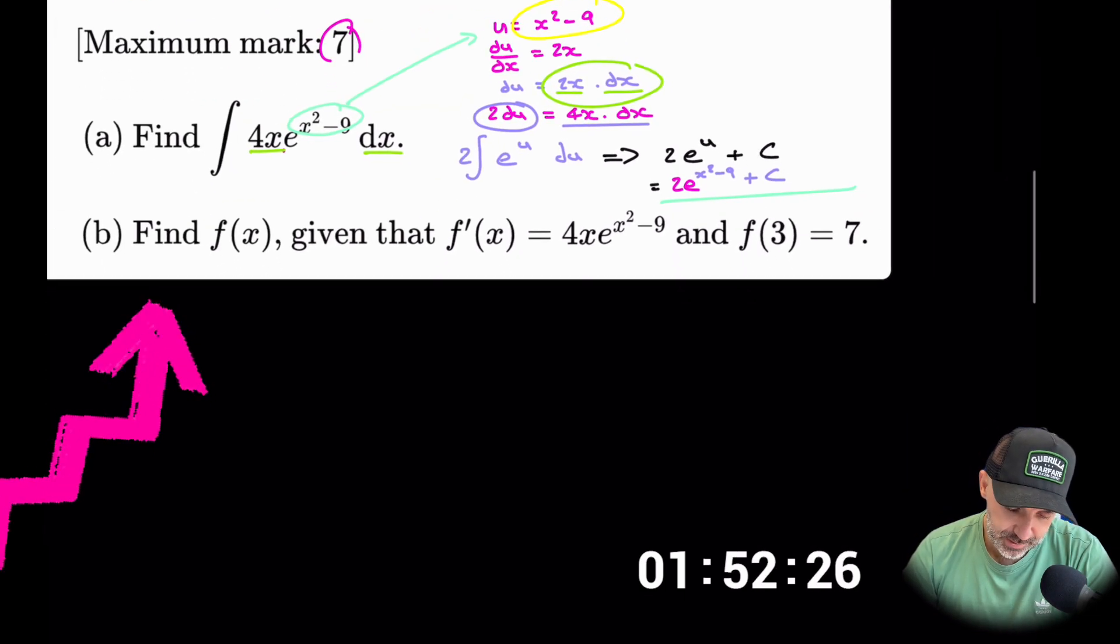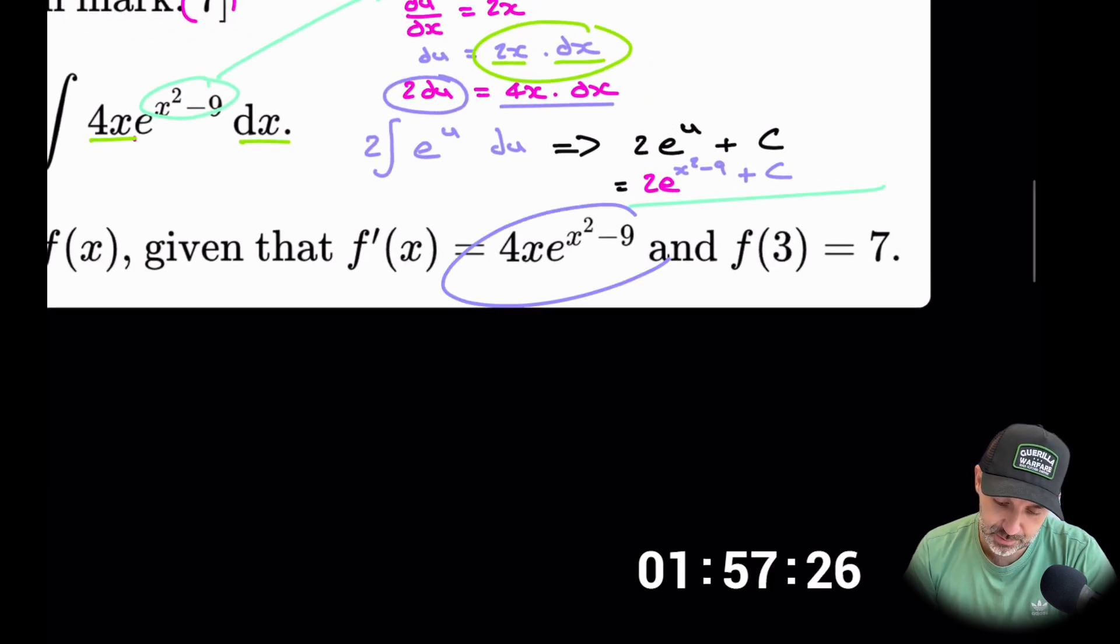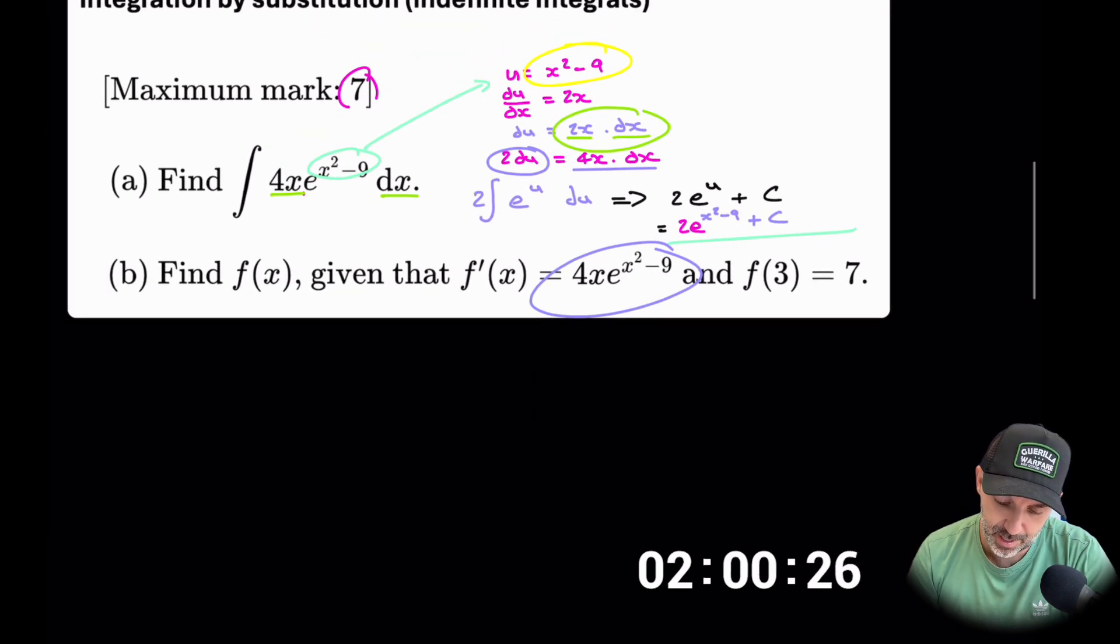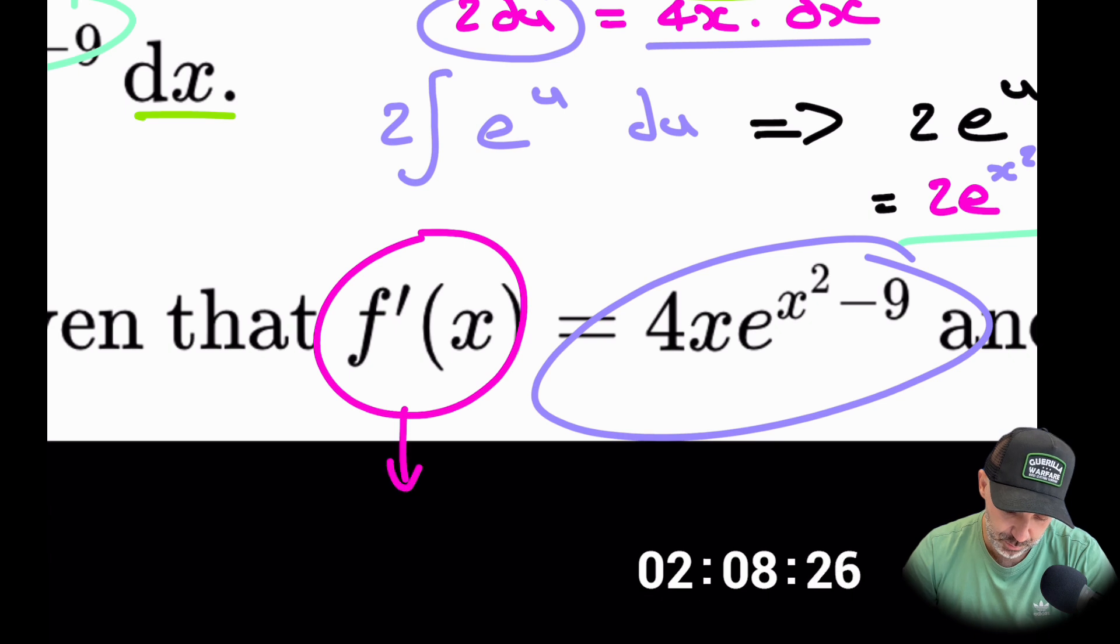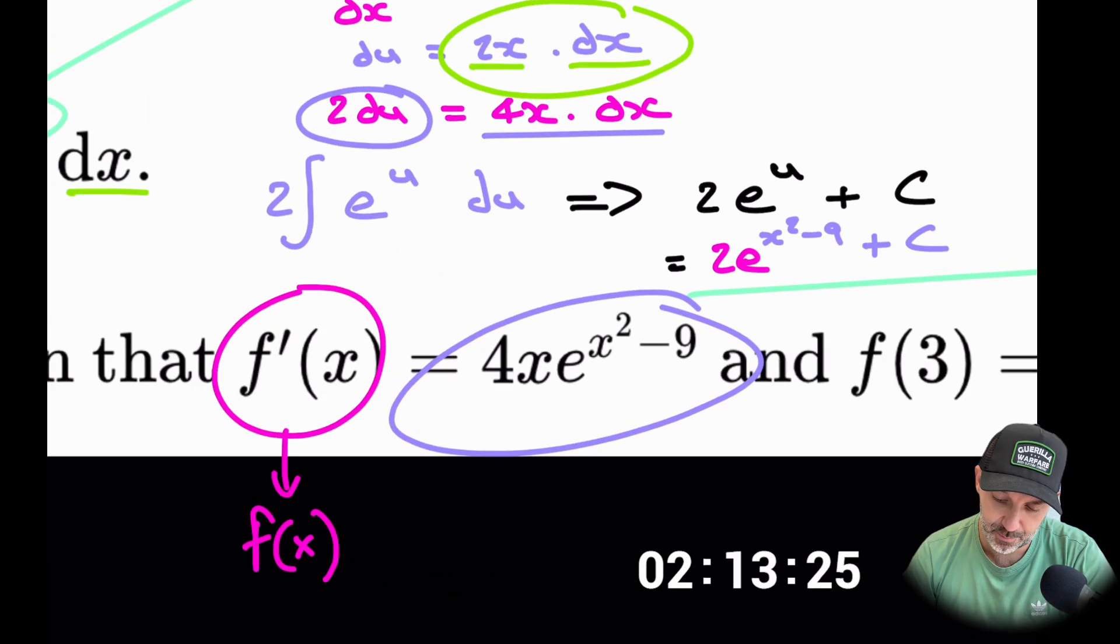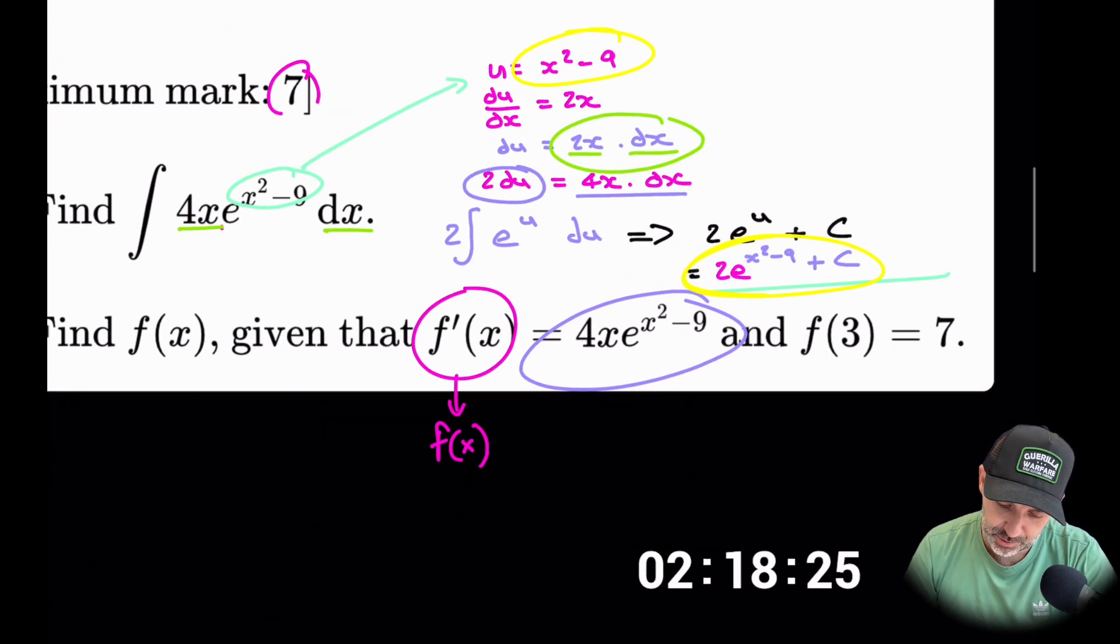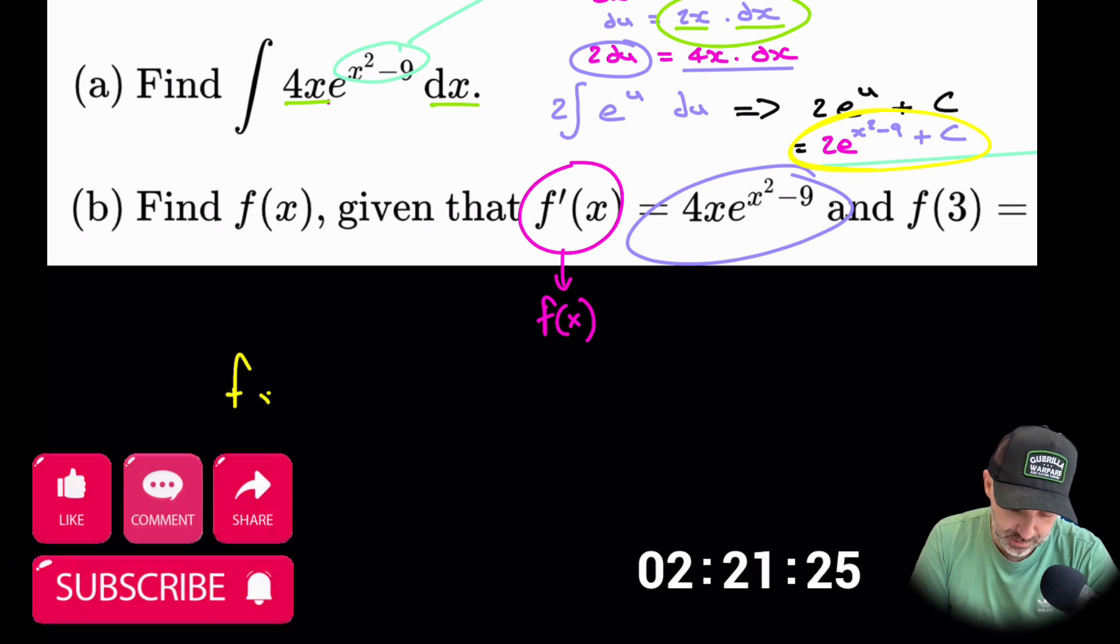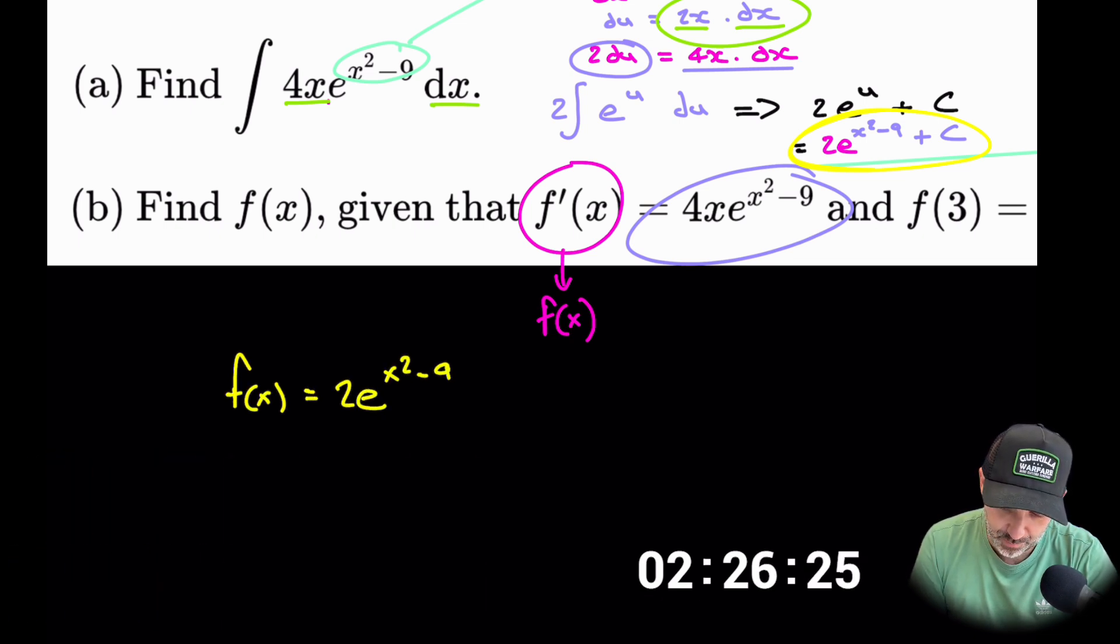Let's go ahead. It says find f(x), so that's the function, given that the derivative was equal to that. Now we just worked with that in part a of the question. When we integrated it, we would move from the derivative function to find f(x). That is exactly what we just found in part a. I'm going to circle here in yellow. Let's just tidy that up a little bit. We think that the expression f(x) is equal to 2e to the x squared minus 9 plus c, but we don't know the value of c.